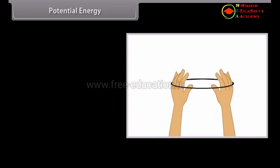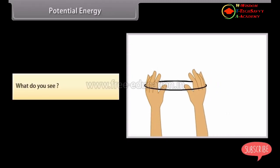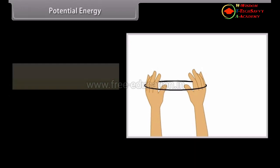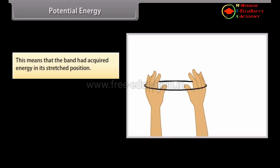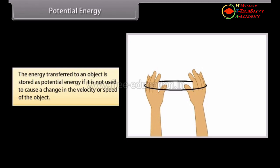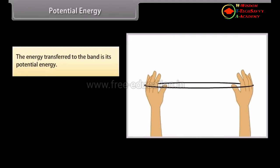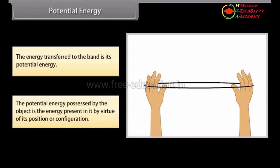Potential energy. Take a rubber band, hold it at one end and pull from the other — the band stretches. Now release one end; the band tends to regain its original length. This means the band had acquired energy in its stretched position. Energy gets stored due to work done on the object. The energy transferred to an object is stored as potential energy if it is not used to cause a change in velocity. The potential energy possessed by an object is the energy present in it by virtue of its position or configuration.